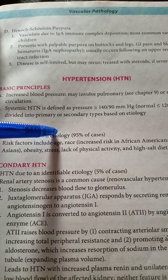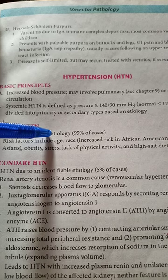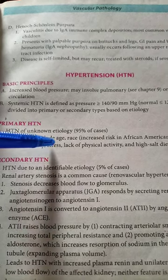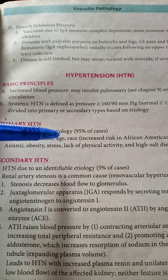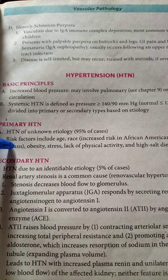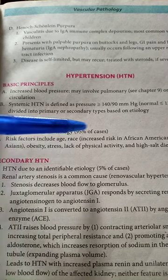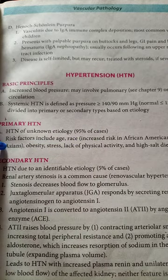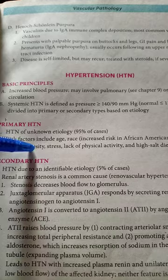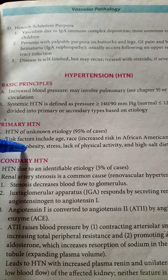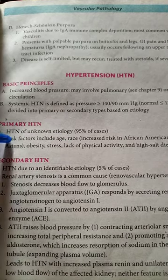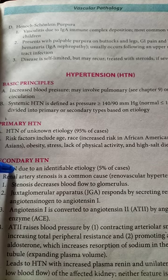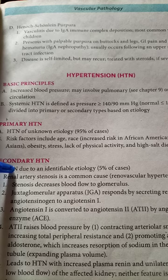Primary hypertension has an unknown etiology and accounts for 95% of cases. Risk factors include age, race — African Americans have a higher risk of developing hypertension while Asians have comparatively less — as well as obesity, stress, lack of physical activity, and a high salt diet, all of which can result in primary hypertension.